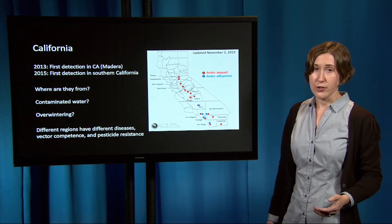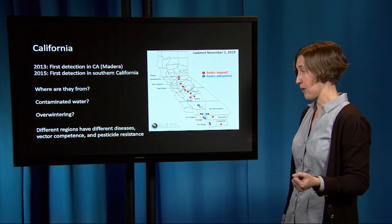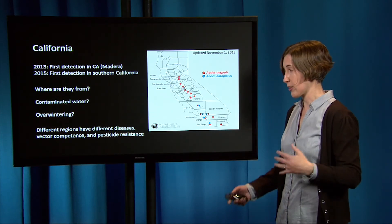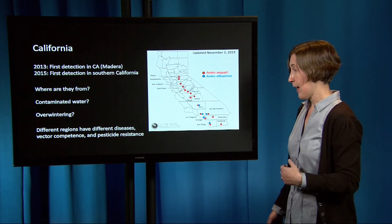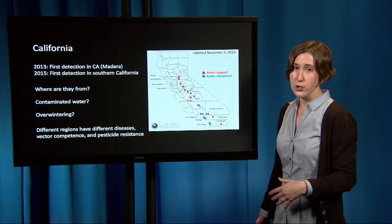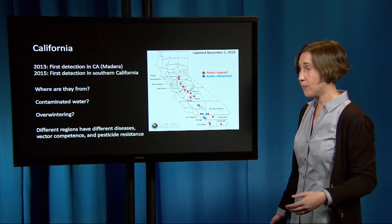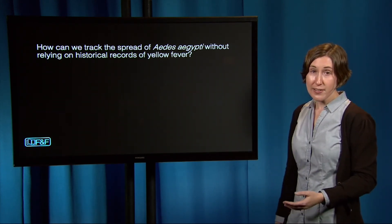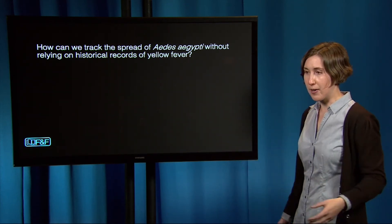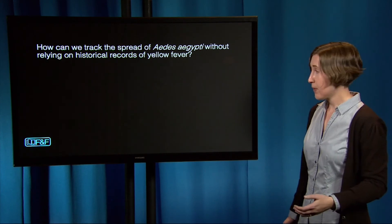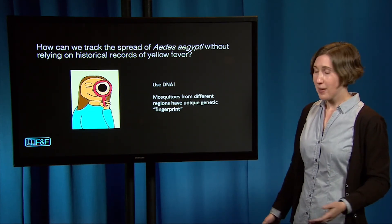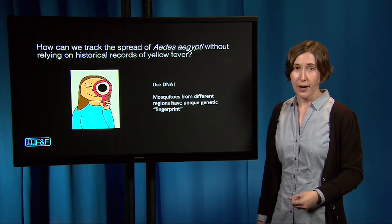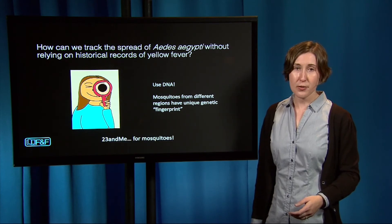It's also important to know where new invasions came from, because you want to know if the mosquitoes are coming from somewhere with disease. Also, different regions vary in the mosquitoes' level of vector competence — meaning how well they transmit disease — and pesticide resistance, which is a genetic adaptation that mosquitoes can evolve. Luckily, we don't have yellow fever prevalent in the United States to study the spread of Aedes aegypti, so we have to find a new tool, and my lab proposes to use DNA.